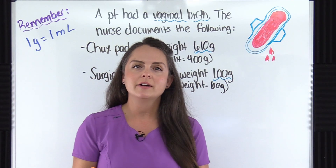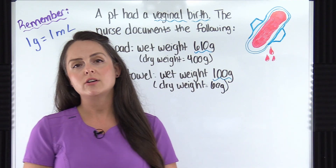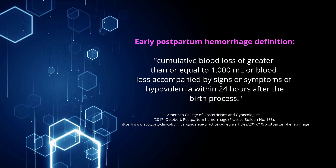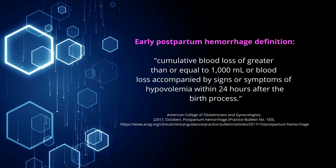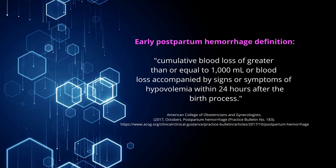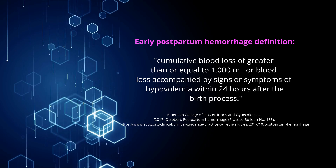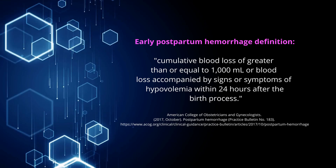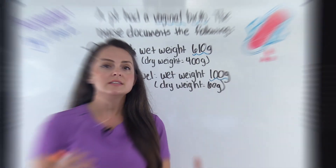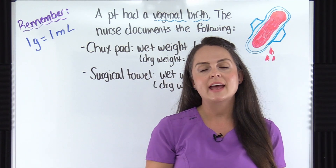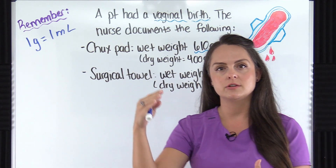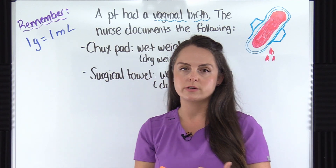Now in 2017, the American College of Obstetricians and Gynecologists updated their guidelines on postpartum hemorrhage. They say that early postpartum hemorrhage is where the patient has a cumulative blood loss of 1,000 milliliters or more, or blood loss accompanied by signs or symptoms of hypovolemia within 24 hours following the birth process. This includes both vaginal and C-section births, because before, the criteria would separate those two.